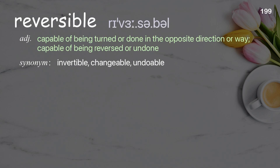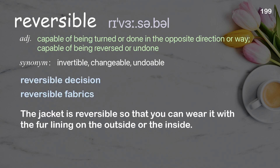Reversible: capable of being turned or done in the opposite direction or way; capable of being reversed or undone. Examples: reversible decision, reversible fabrics. The jacket is reversible so that you can wear it with the fur lining on the outside or the inside.